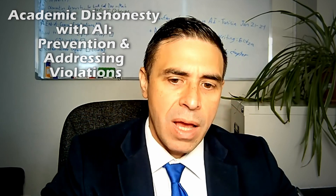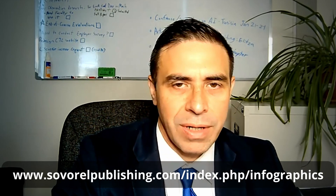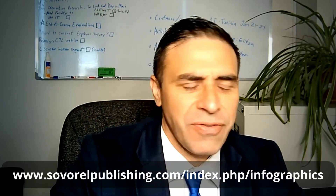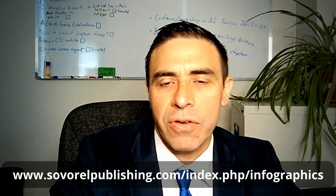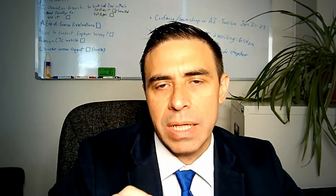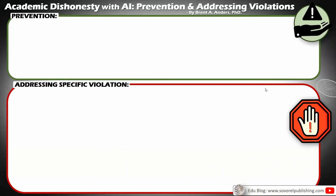This is broken up — I've created an infographic, and this infographic will be available on my website as well as through Twitter, Facebook, and everything. So it's available there for you, but I'm going to go through and explain each aspect of it. Inevitably, this is actually going to happen — there is going to be a violation — but the more that we can do to prevent it, the better. So the first thing we're going to address is different things we can do to actually prevent academic dishonesty with AI.